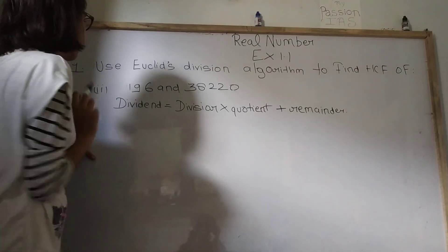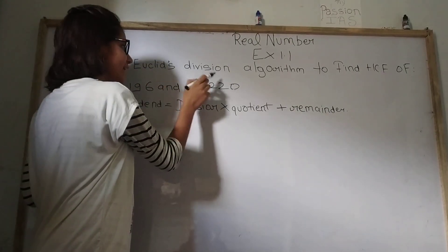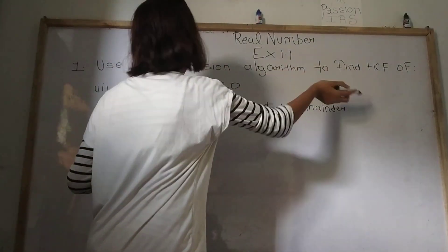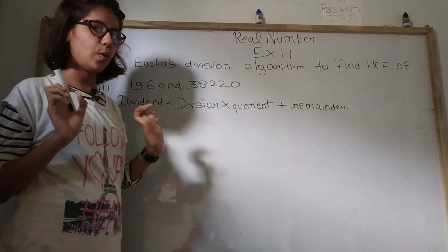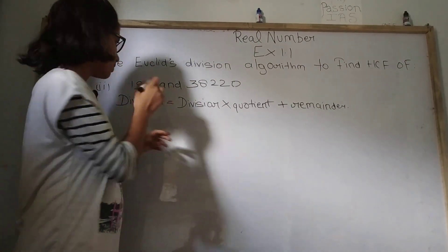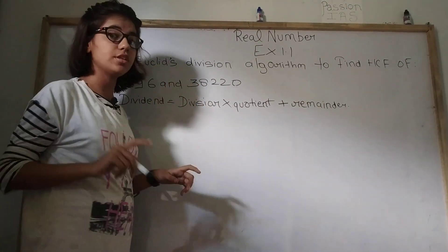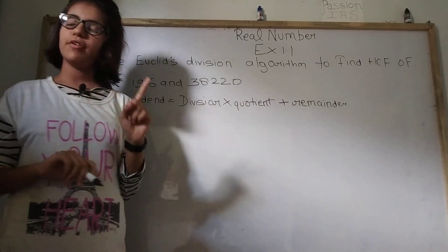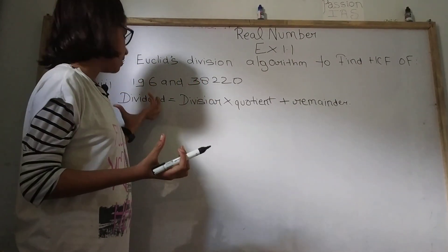So first we should know what is our question: use Euclid's division algorithm to find the HCF of these two given numbers. So what are our given numbers? 196 and 38,220.